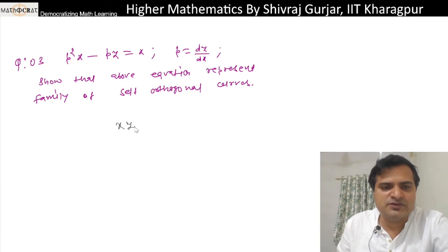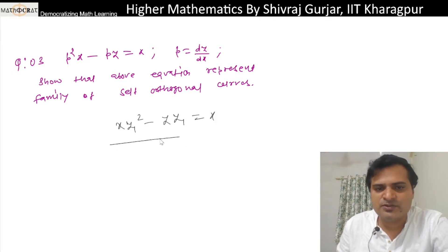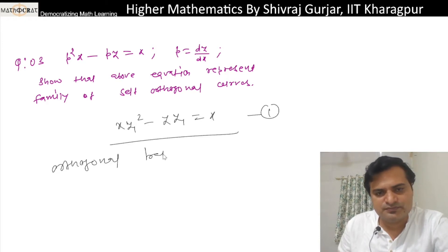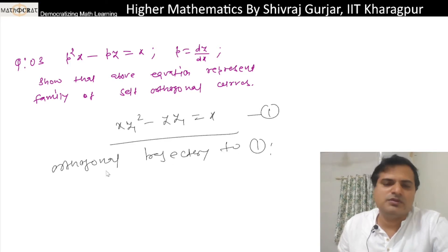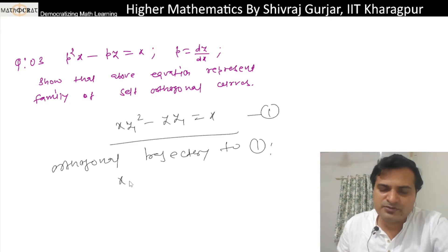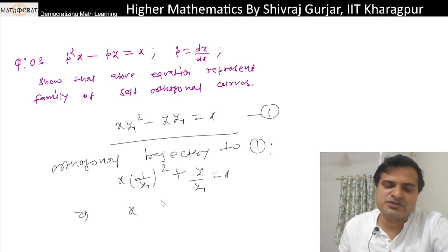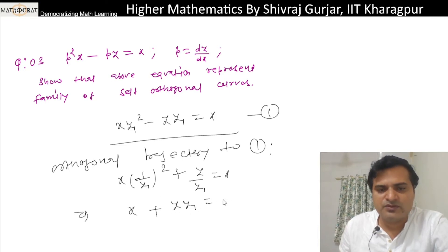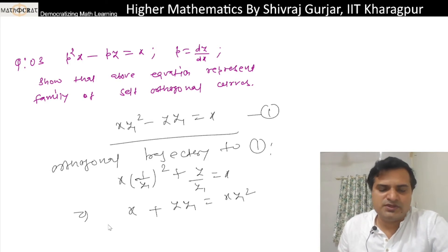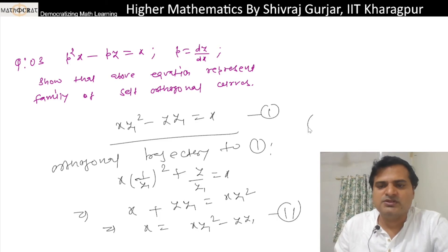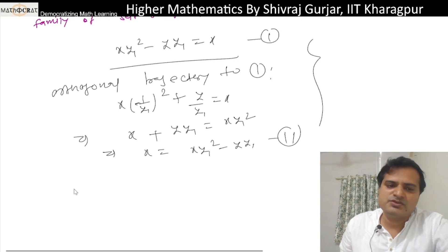Basically x·y₁² minus y·y₁ equals x is the given family of curves. For the orthogonal trajectory, replacing y₁ with minus 1/y₁: x/y₁² plus y/y₁ equals x, or multiplying throughout by y₁²: x equals x·y₁² minus y·y₁. These two are the same equation, so they are self-orthogonal.